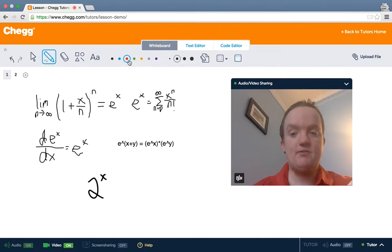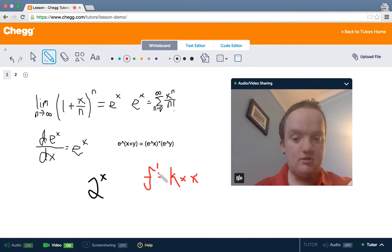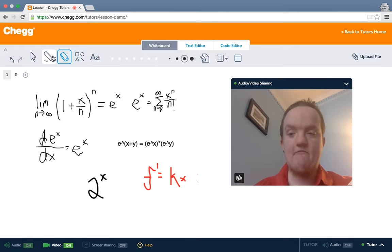This is useful in problems where you have the growth rate proportional to the amount of stuff that's available. So for example, if you have k, some constant k times x, and the derivative is proportional to k times f, then you're going to have that the solution is some version of an exponential function.